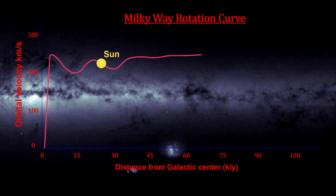If our current theory of gravity holds up for galactic distances, then this curve tells us that our model of the Milky Way is missing something. In order for objects far from the center of the galaxy to be moving faster than predicted, there must be significant additional mass far from the galactic center exerting gravitational pulls on those stars — in other words, dark matter.